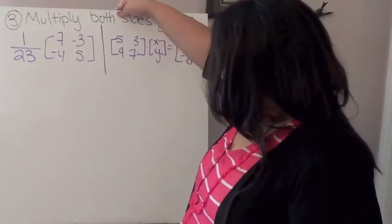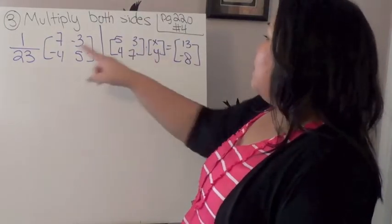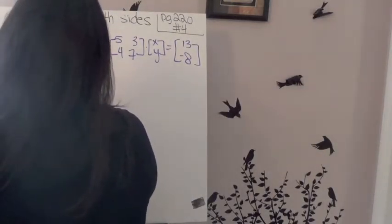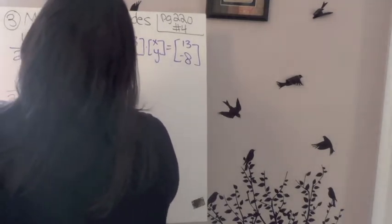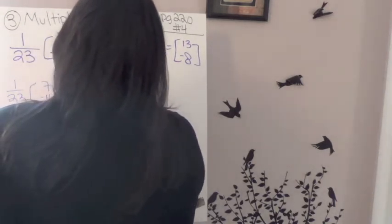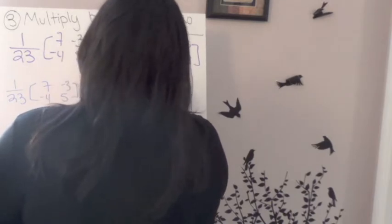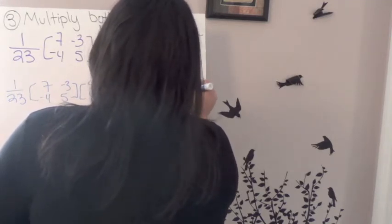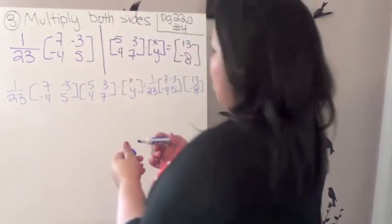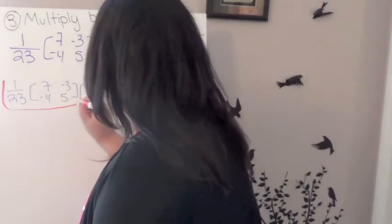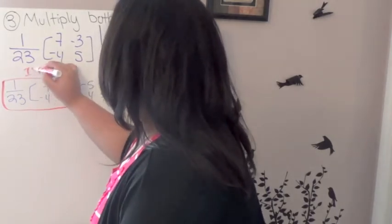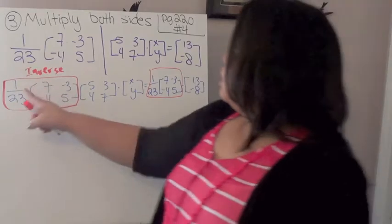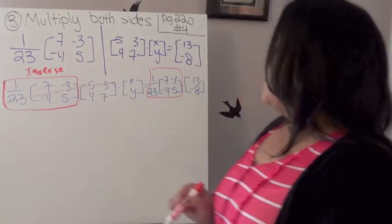So here's our inverse, right here. And here's our equation. So I've multiplied it by this side. What it looks like here is I've done 1 over 23, [7, -3; -4, 5], times [5, 4; 3, 7], times [X; Y], equals 1 over 23, [7, -3; -4, 5], times [13; -8]. So I took this, which is the inverse, and I multiplied it by both sides. Well, because this is the inverse of this, if I multiplied it out, they would cancel out, leaving me with just X, Y on this side.